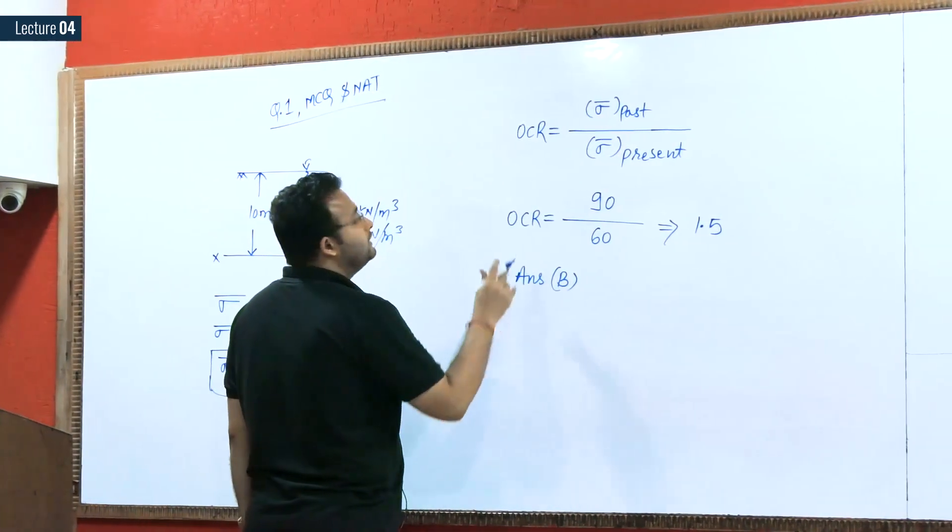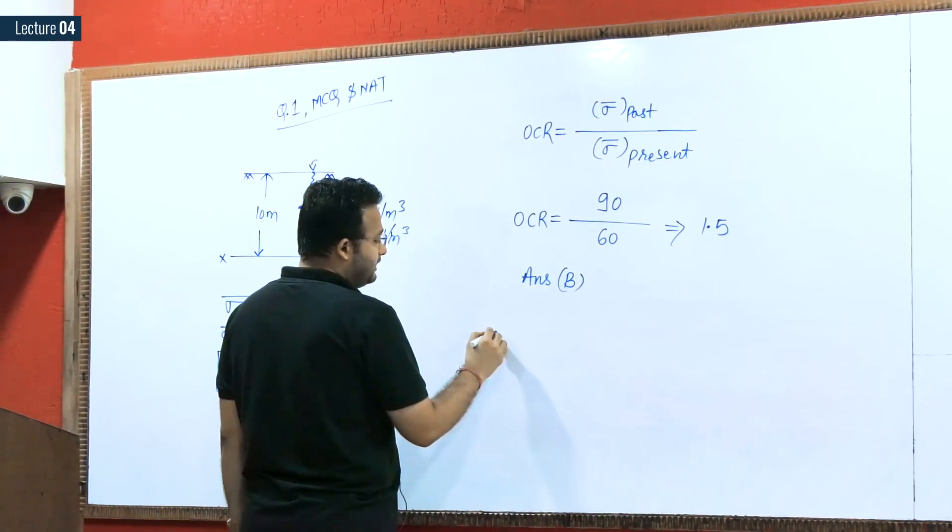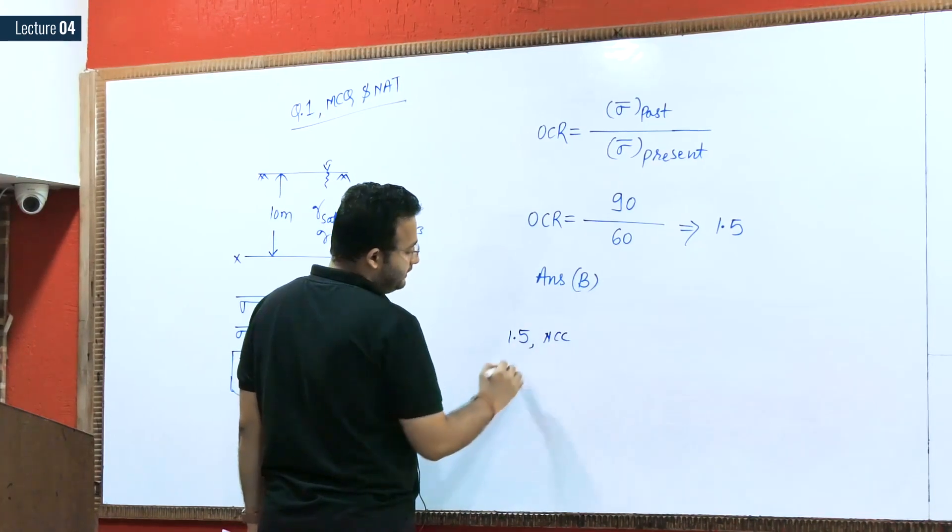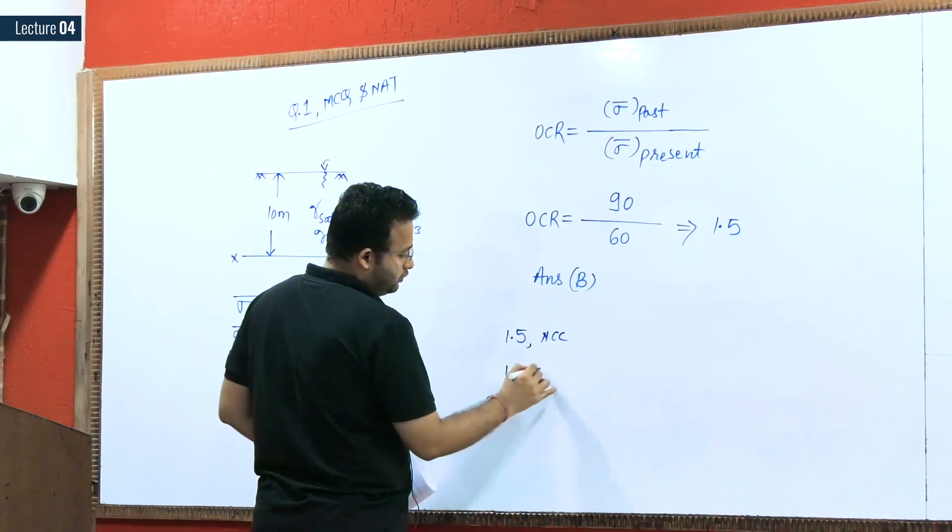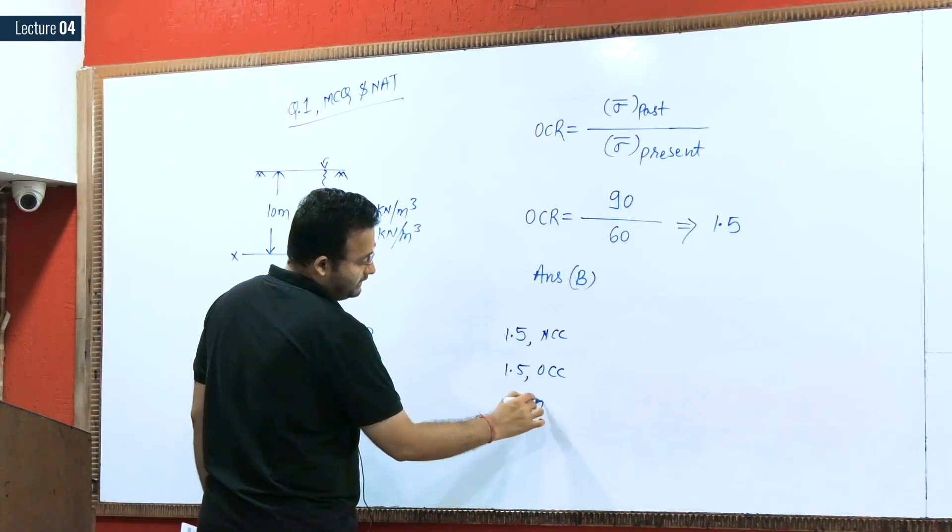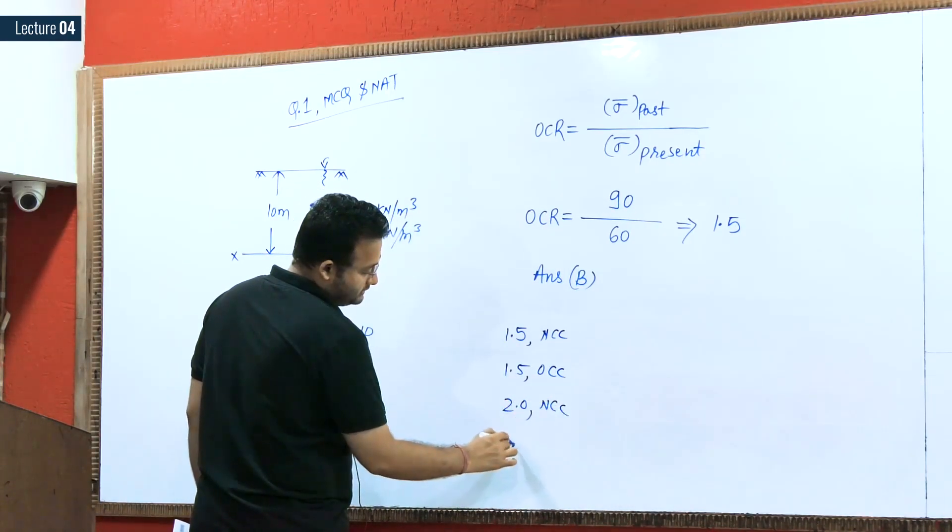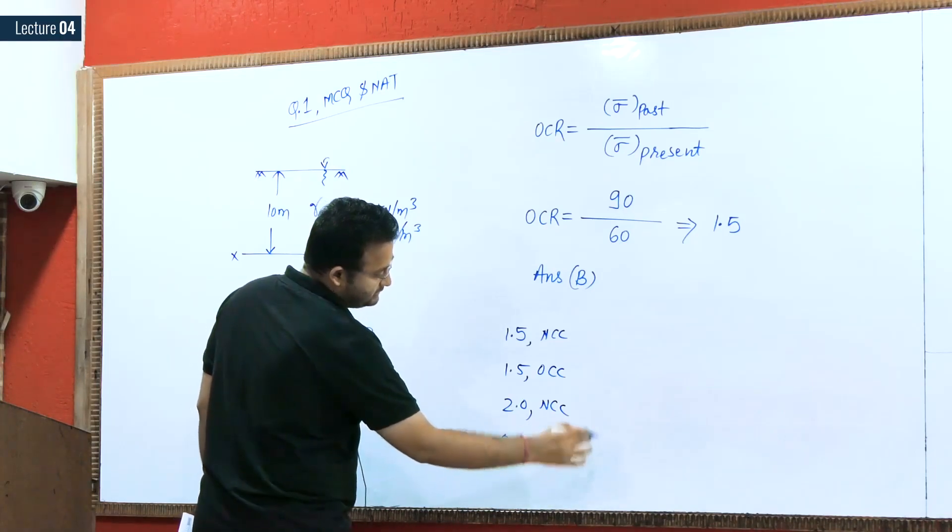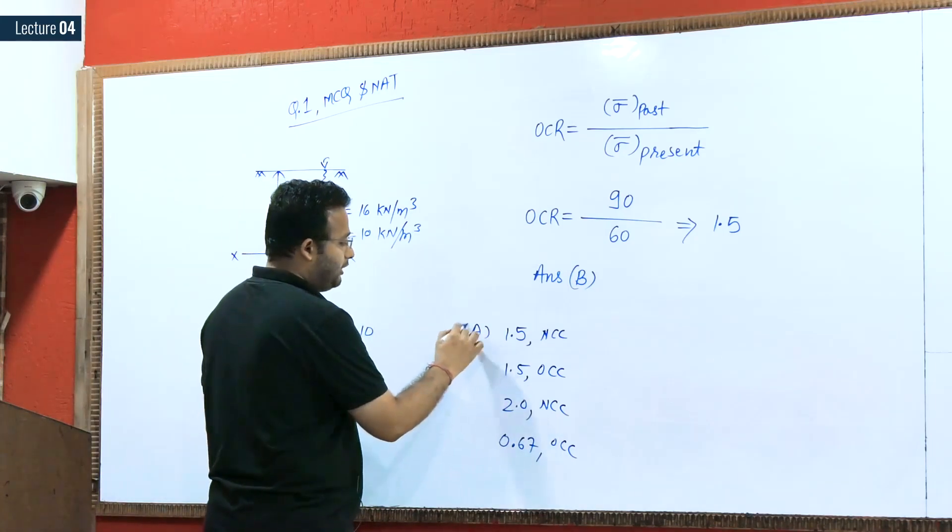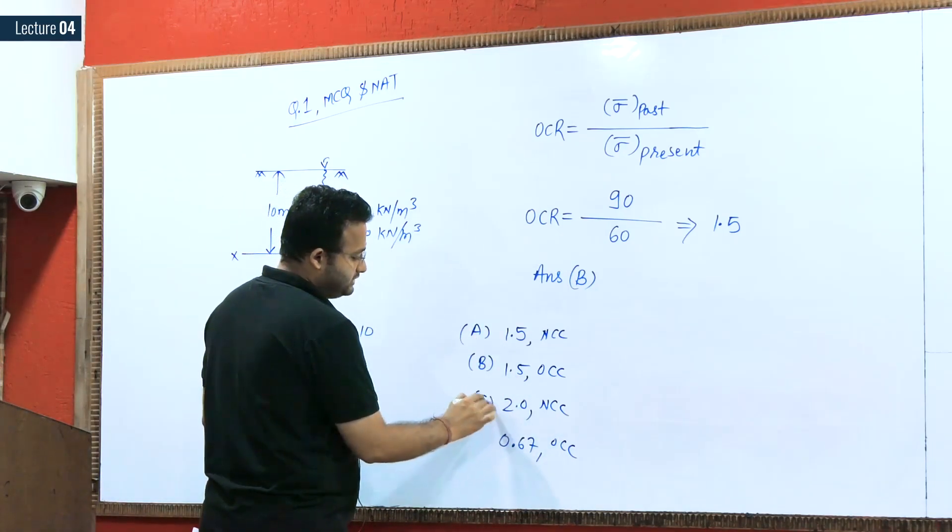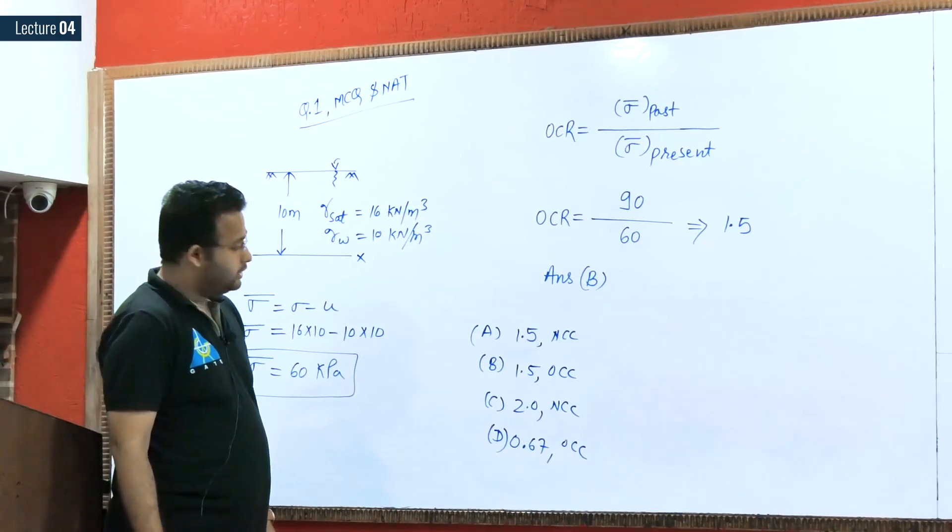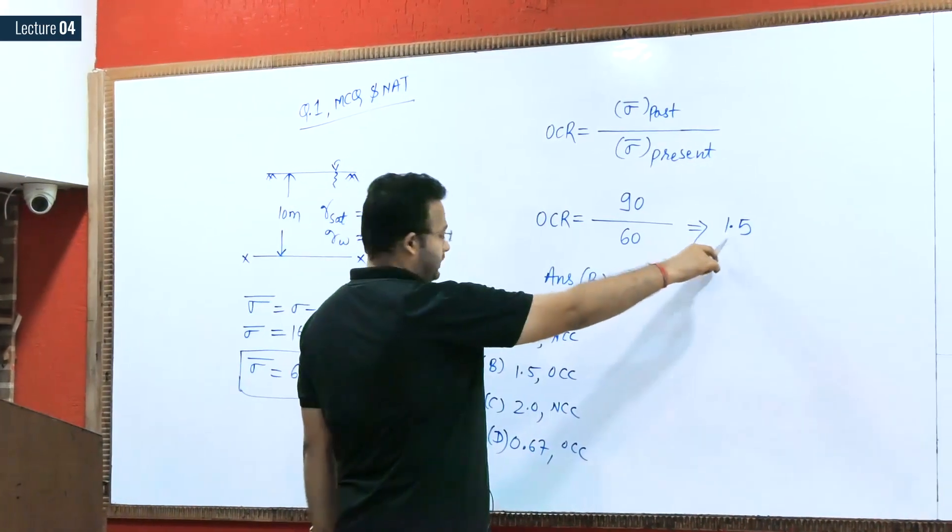One thing I want to ask: in this question they asked about OCR only. Suppose in the next year they can ask OCR and type of soil. They can mention find the OCR and type of soil. So answer they can give 1.5 NCC, 1.5 OCC, suppose 2 NCC, 0.67 OCC, something like this options they can give.